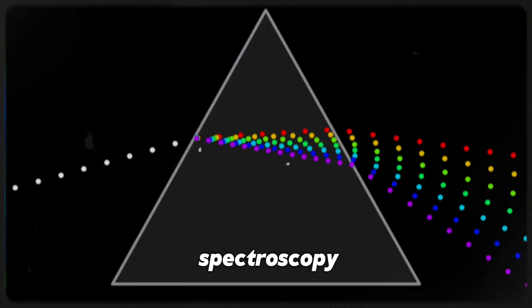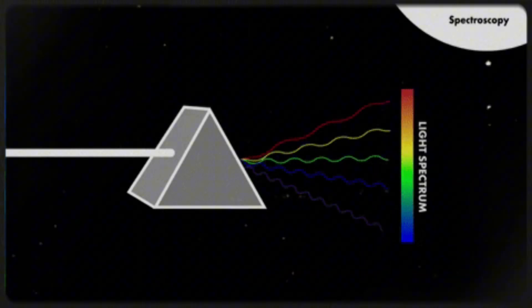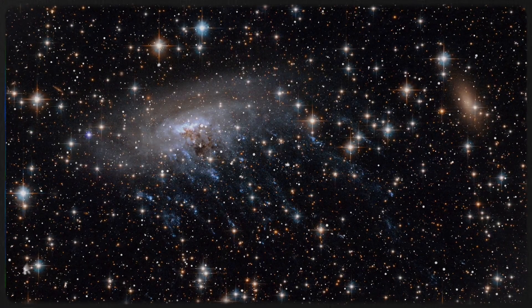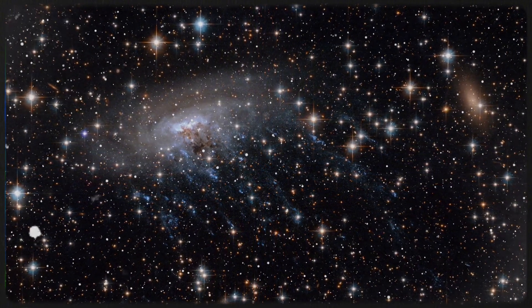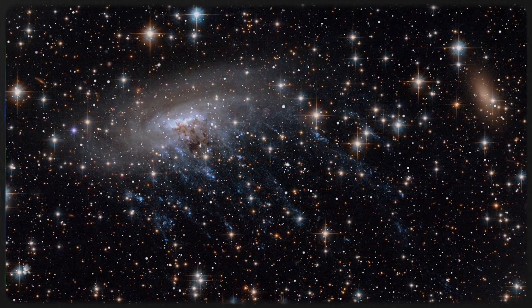Basically, it lets scientists figure out how far light has traveled across the expanding universe, kind of like stretching cosmic taffy. This galaxy has a redshift of more than 14, which means we're looking at something that existed just 280 million years after the Big Bang.